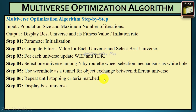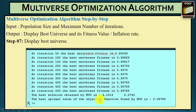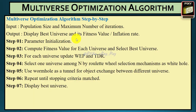We check the current iteration against the maximum iteration and repeat the loop until the stopping criteria is matched. In the end, we display the best universe. A fitness function is used here — the best optimum value obtained is 0.00492, and another function was also tested giving 0.39789.